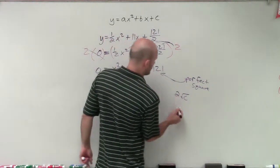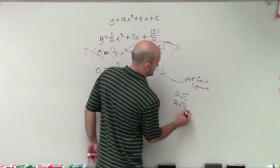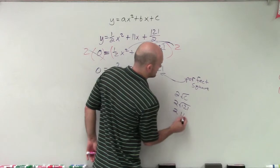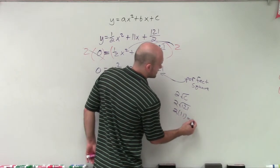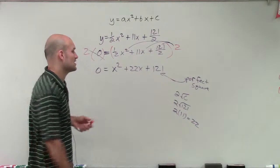Well, the square root of 121 is going to be 11, and 2 times 11 is going to be 22. So therefore, this is a perfect square trinomial.